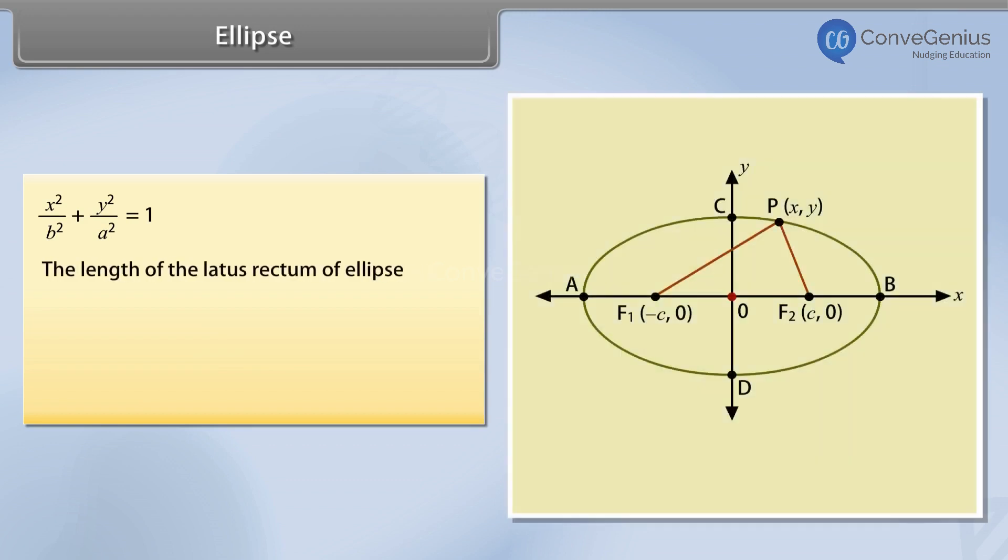The length of the latus rectum of ellipse x squared upon a squared plus y squared upon b squared equals 1 is 2b squared upon a.